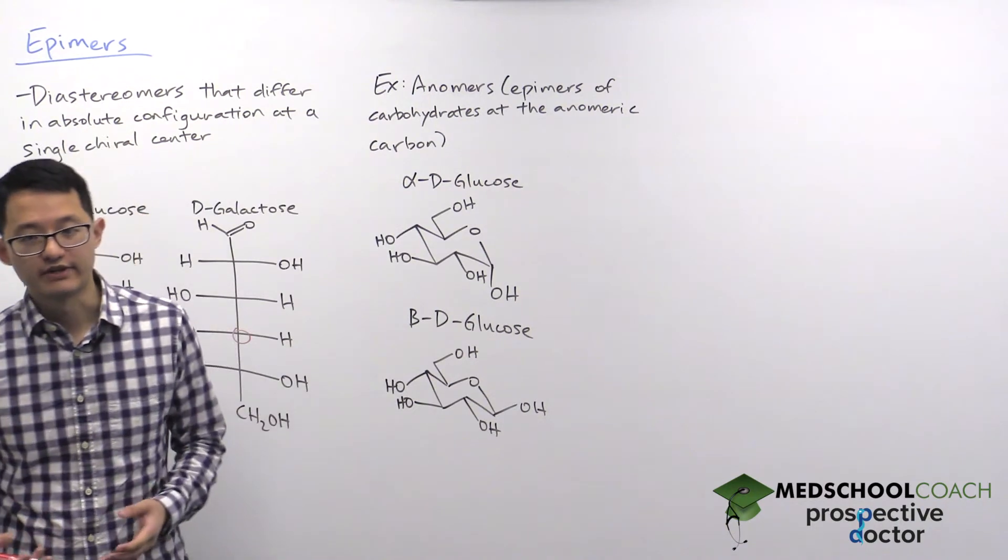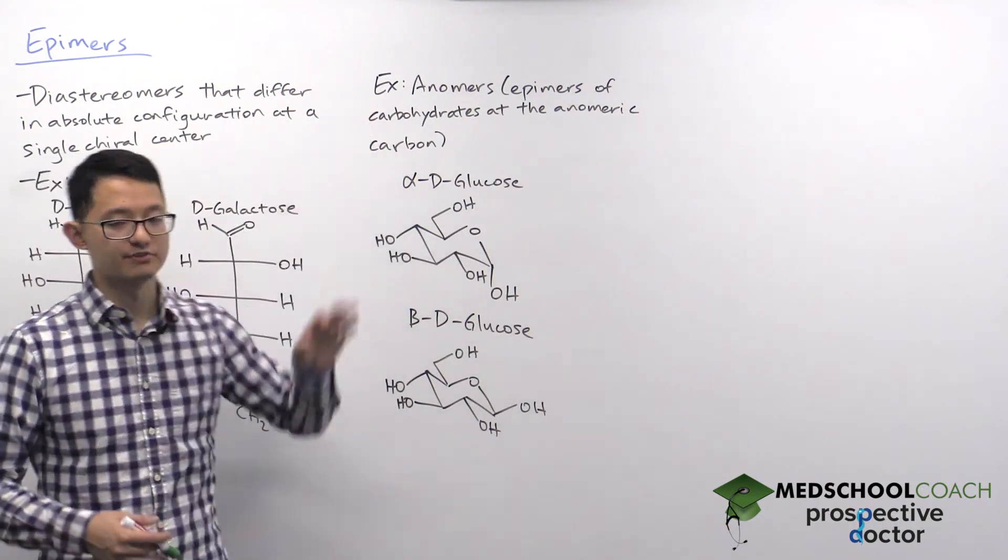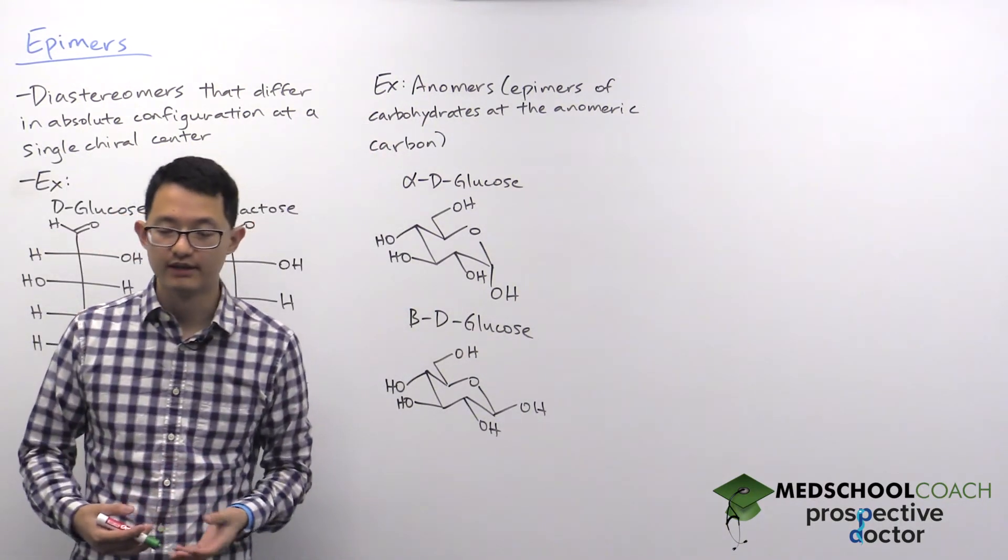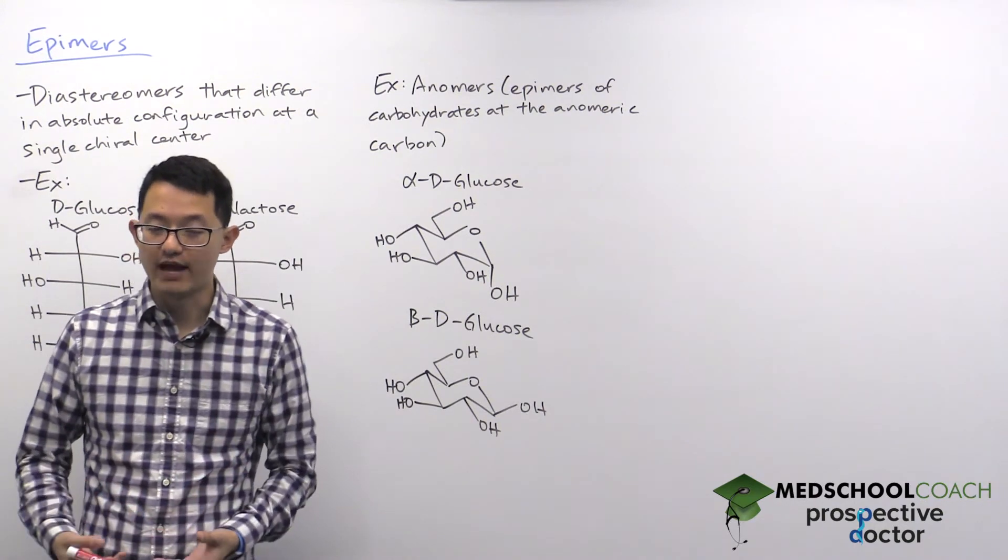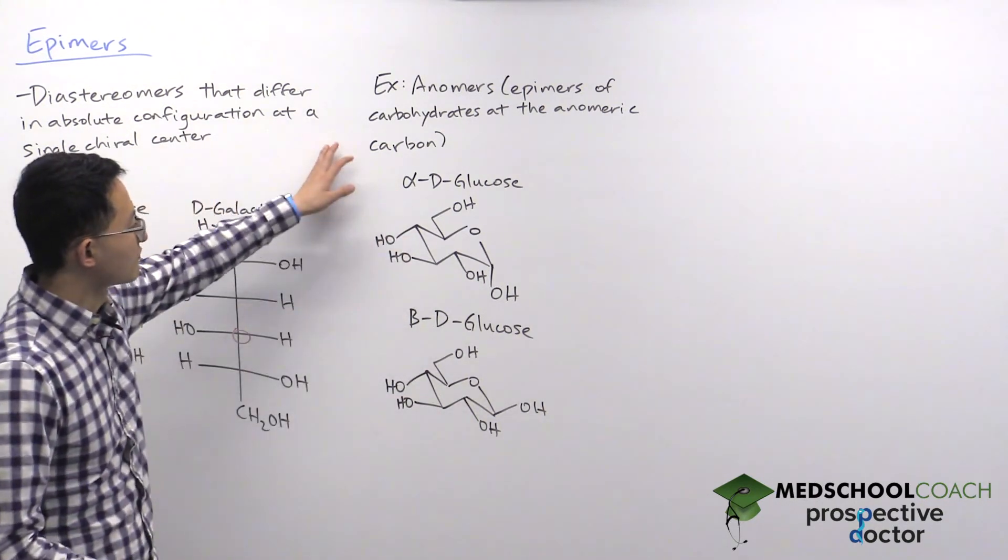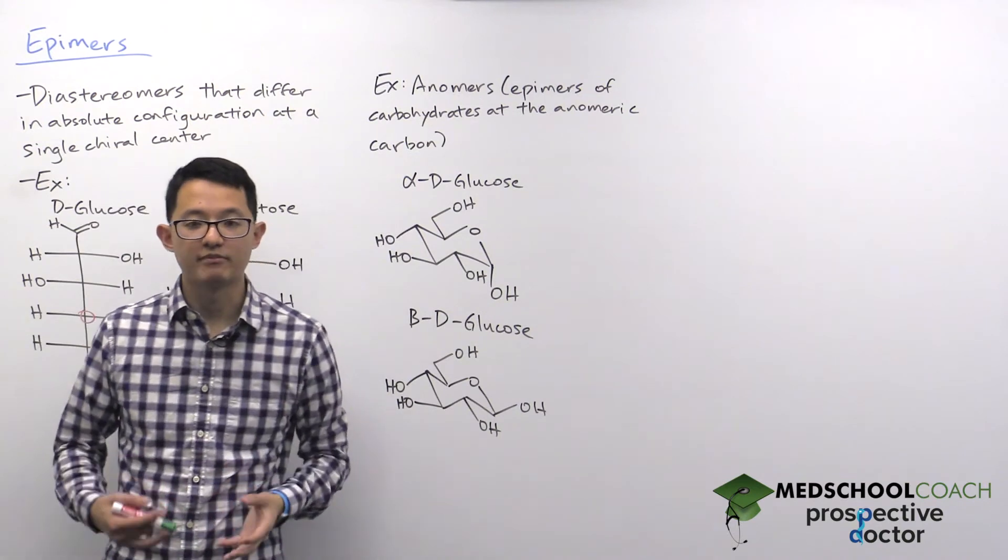You'll also recall in the last video I talked about anomers being another type of diastereomer. Anomers are actually a subset of epimers. They're epimers of carbohydrates at the anomeric carbon.